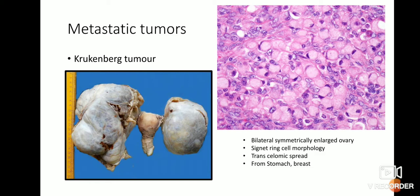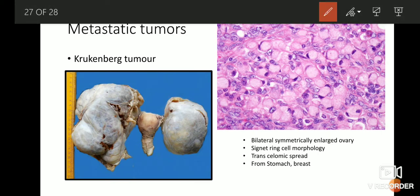The last thing we need to know is metastatic tumors. The ovary is a common site of metastasis from different tumors of the body. There is a peculiar type of metastatic tumor in the ovary known as the Krukenberg tumor. This is important to know, and we have this specimen in our laboratory which you will be asked to identify. The first picture shows a Krukenberg tumor — it is a kind of metastatic tumor where you see a lot of signet ring type cells in the ovary.